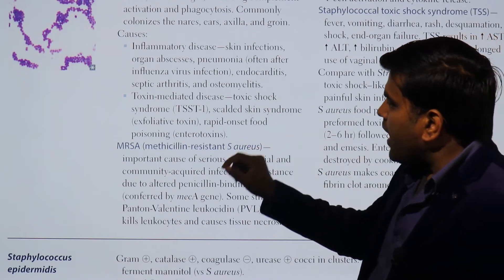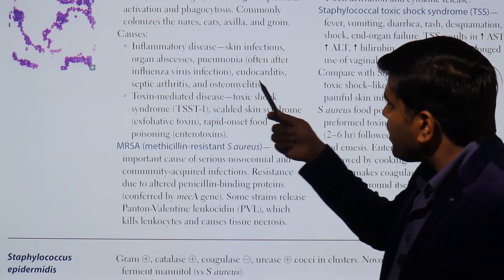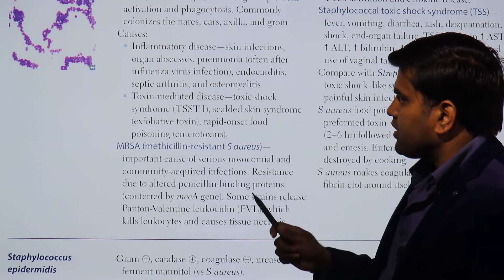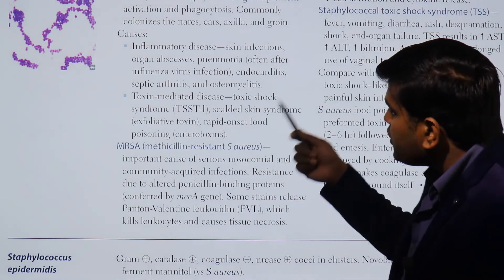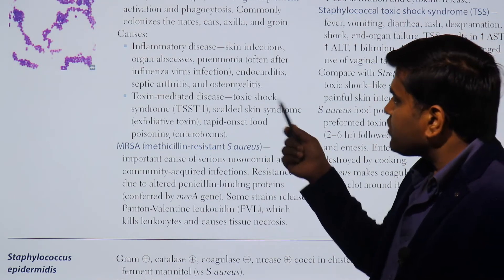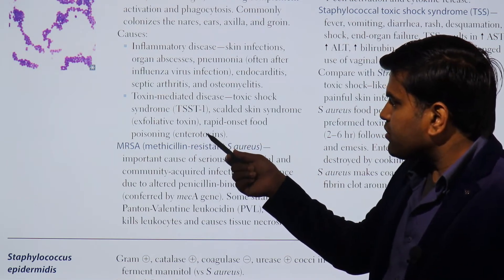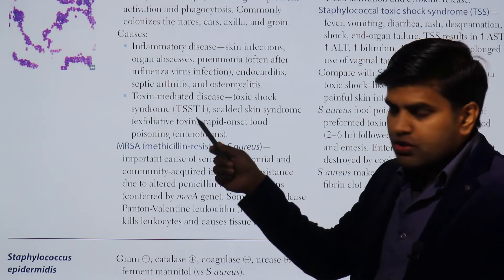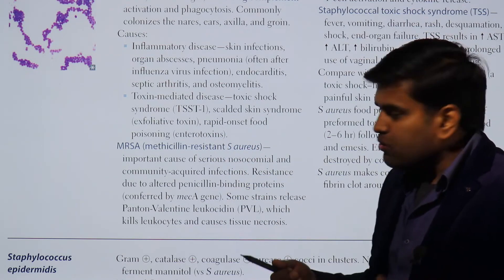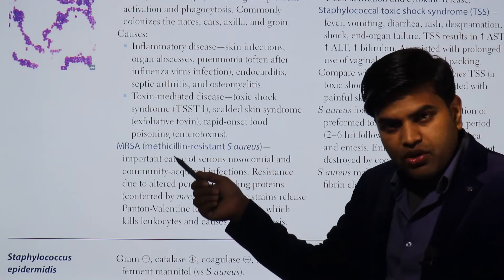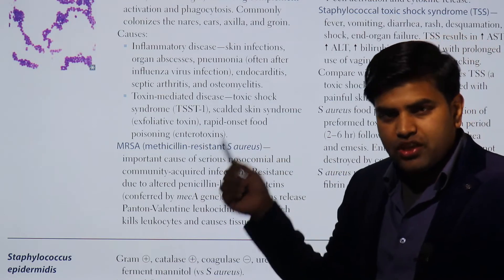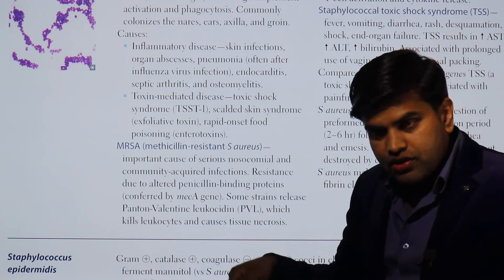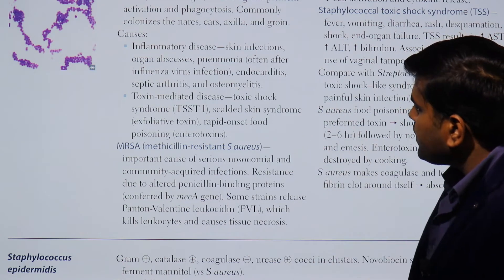S. aureus causes inflammatory diseases including skin infections, organ abscesses, pneumonia (mainly after influenza infection), endocarditis, septic arthritis, and osteomyelitis. It also causes toxin-mediated diseases: toxic shock syndrome toxin (TSST), scalded skin syndrome due to exfoliative toxin, and rapid-onset food poisoning due to enterotoxin. These three major toxin-mediated conditions are important to remember.